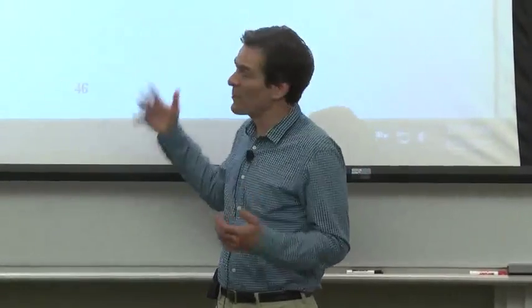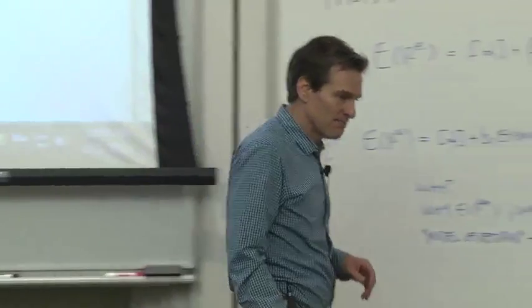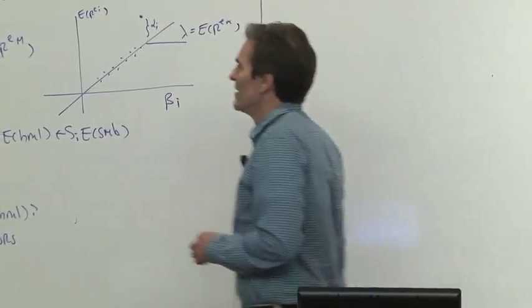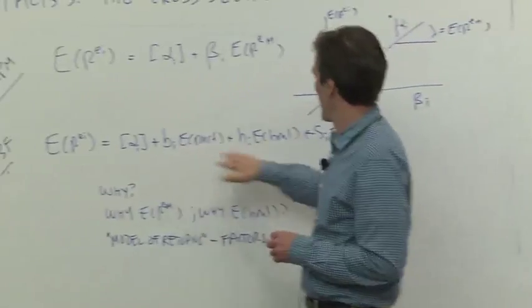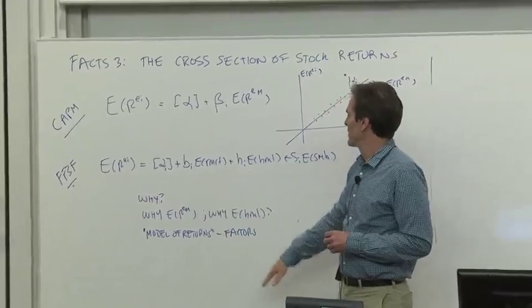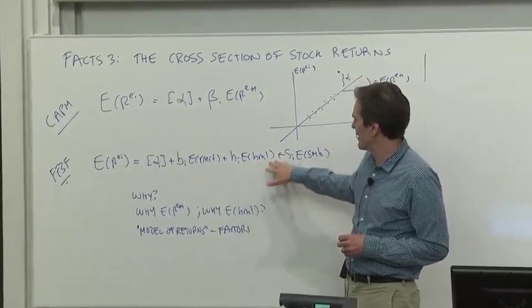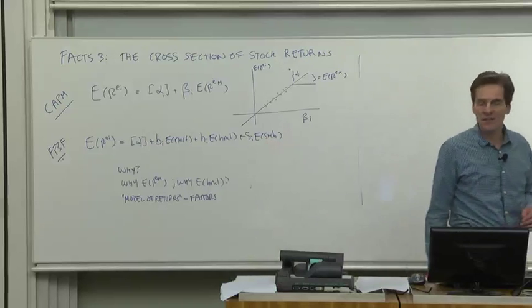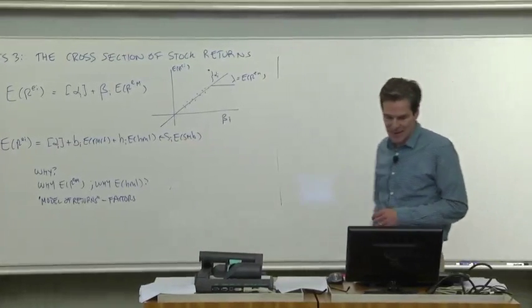The answer is multi-factor models, which is how we now understand betas. Fama and French introduced a three-factor model, a version of the capital asset pricing model, with more factors. Yes, there's the market return, but there are also regression coefficients on a new factor of value minus growth stocks, HML, and another new factor, small minus big stocks, SMB.